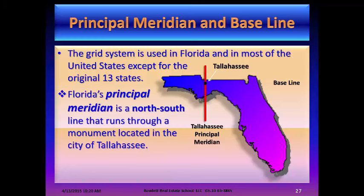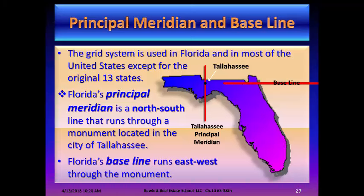Florida's principal meridian is a north-south line that runs through a monument located in the city of Tallahassee. Florida's baseline runs east and west through the monument.